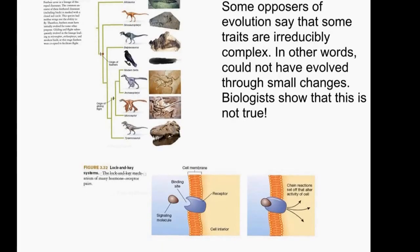These two examples showed that complex traits have intermediate stages that are both functional and selected, but did not serve the same function in the past as they do today. Some opposers of evolution say that some traits are irreducibly complex — in other words, could not have evolved through small changes. However, biologists show that this is not true, and we hope you learned that is the case as well.